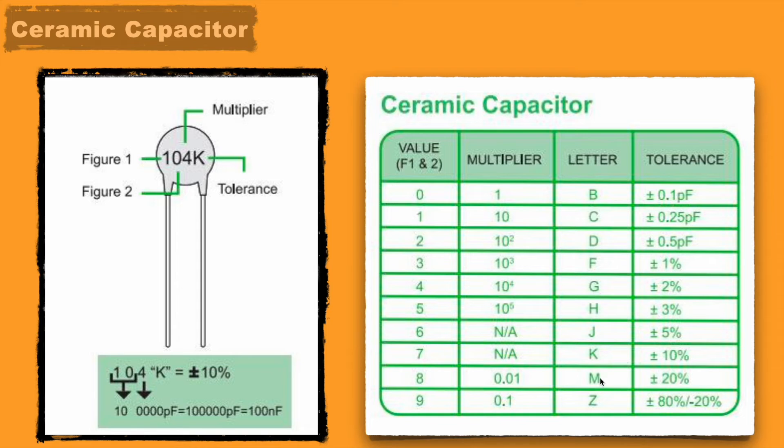Mostly J, K and M are used. J is having plus minus 5% tolerance. K is having plus minus 10% tolerance. M is having plus minus 20% tolerance. So with the help of this understanding, we can easily decode the value of ceramic capacitors.